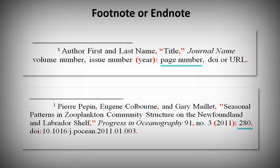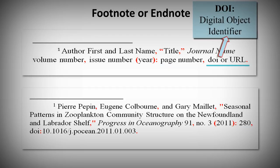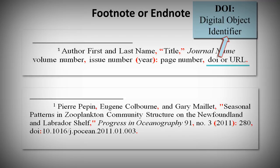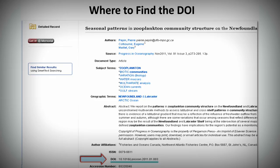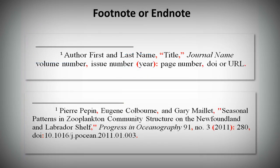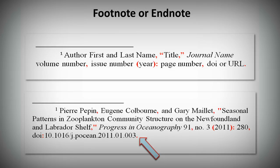Then enter the page number where you've found the quotation, followed by a comma. Finally, enter the DOI or URL for the article. The DOI is a digital object identifier. Many articles you access through the library will have a DOI number. For example, in the Academic Search Premier Index, the DOI number is displayed in the article's record. If the article has a DOI number, write DOI colon followed by the number. Also notice the first line of each note is indented, and don't forget a period at the end.